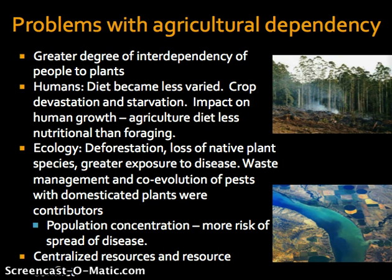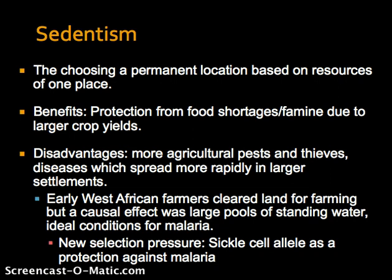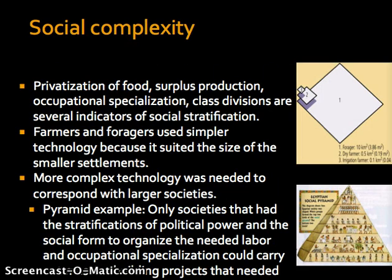Some theorists argue that the increase in agriculture allowed for the conditions of sedentism to occur — choosing a permanent location based on concentrated resources. Benefits include protection from food shortages and famine due to larger crop yields, while disadvantages include agricultural pests, thieves, and disease. With social complexity, you see privatization of food, surplus production, occupational specialization, and class divisions, which are several indicators of social stratification visible in the archaeological record.